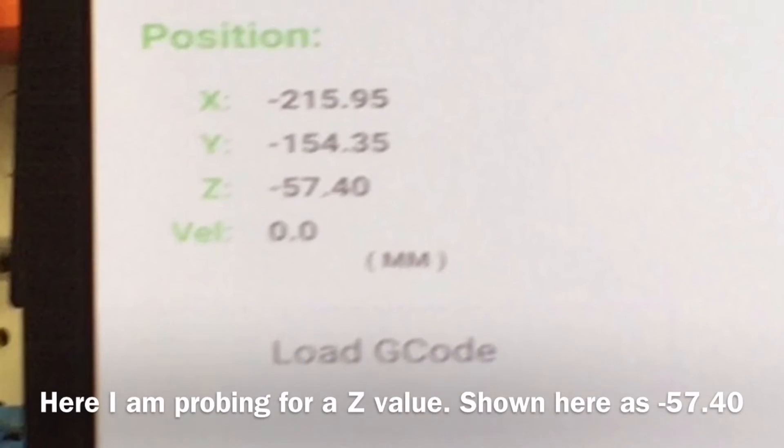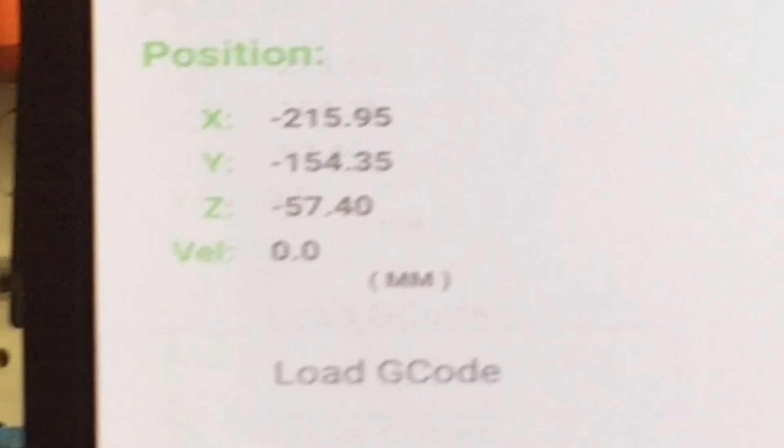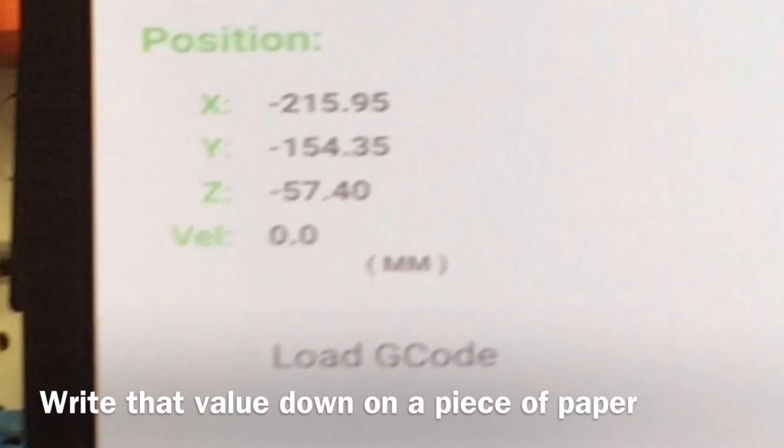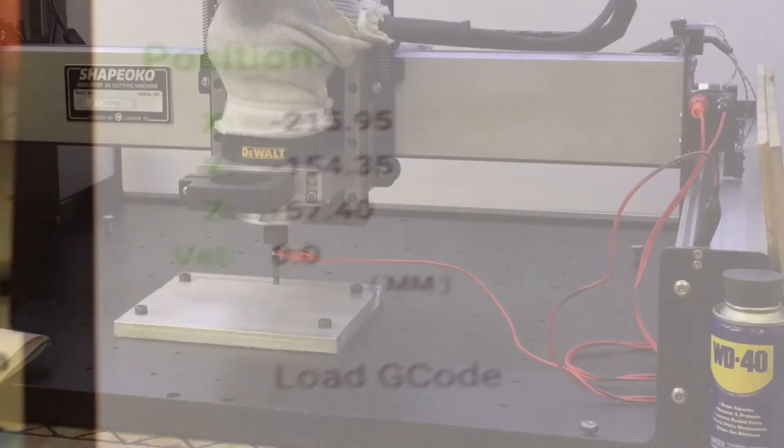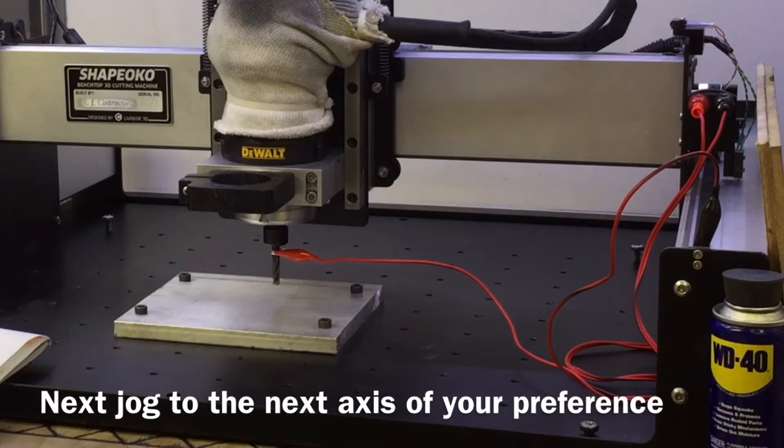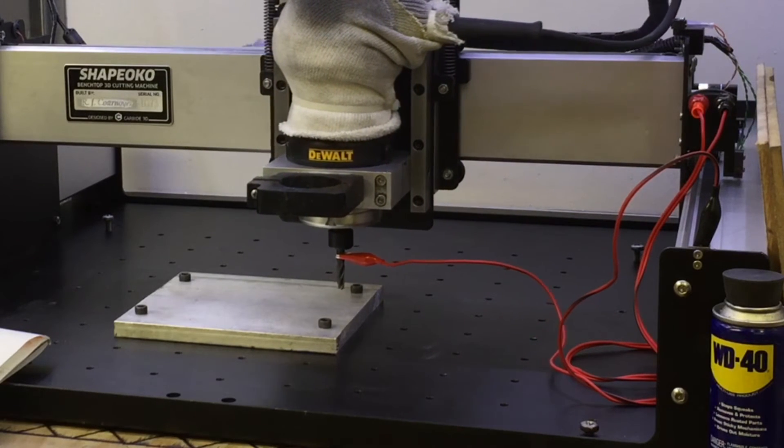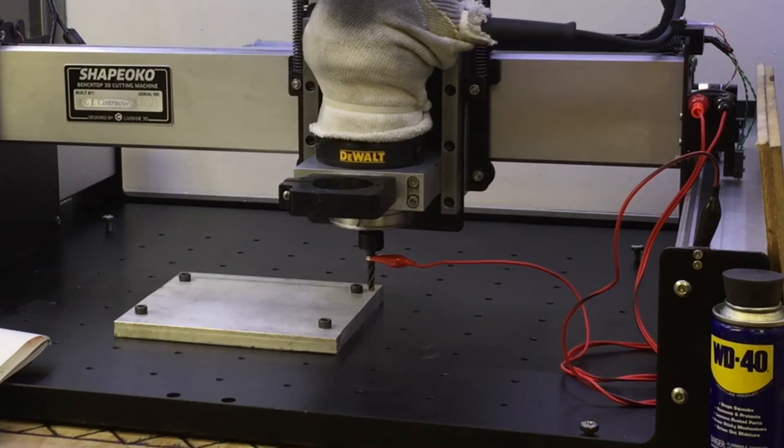So you're going to need to write down your values—X, Y, Z, whatever order you probe them. Then you need to do some simple math: subtracting half your cutter or adding half your cutter depending upon the direction you're probing. You've already been doing this math if you've been using the paper method.